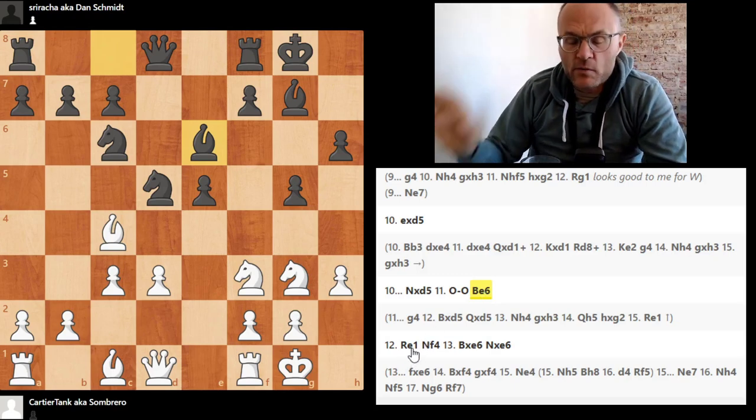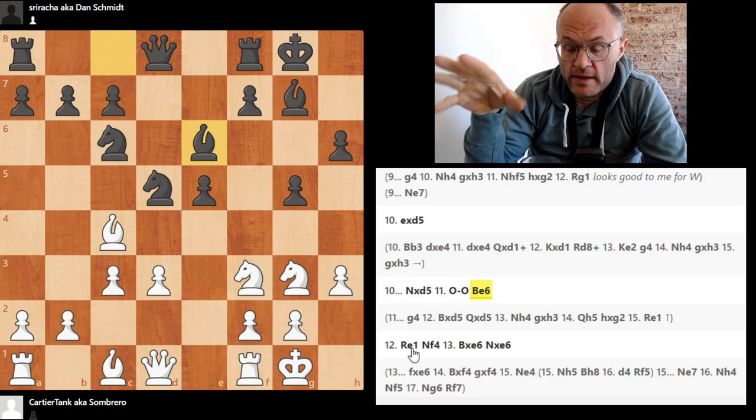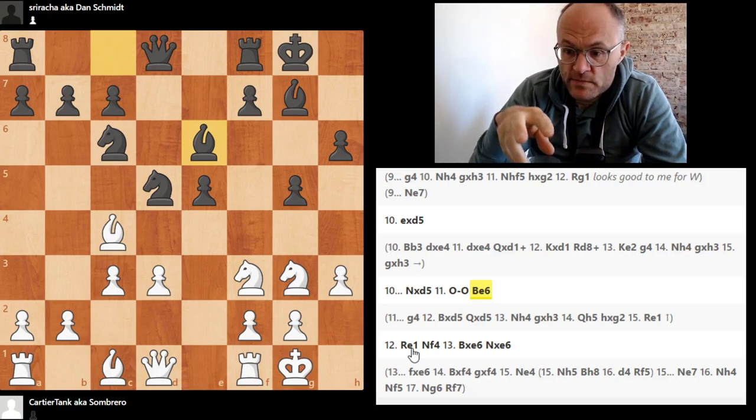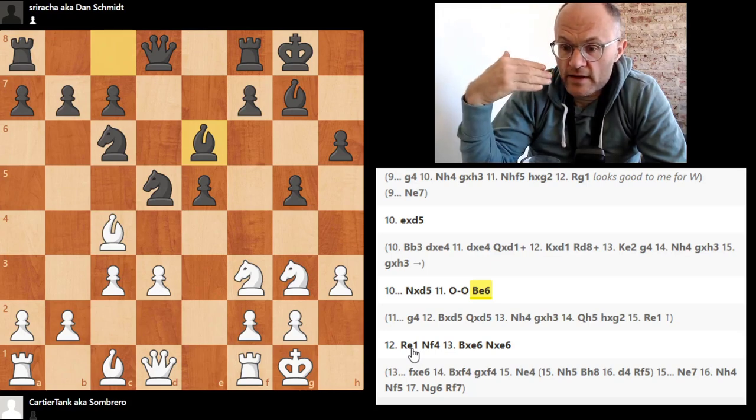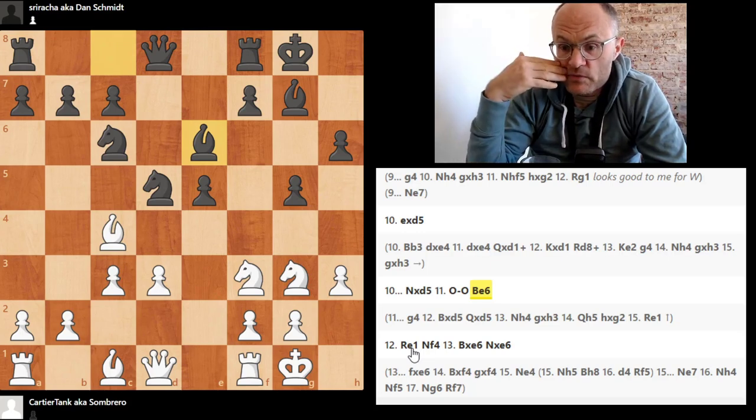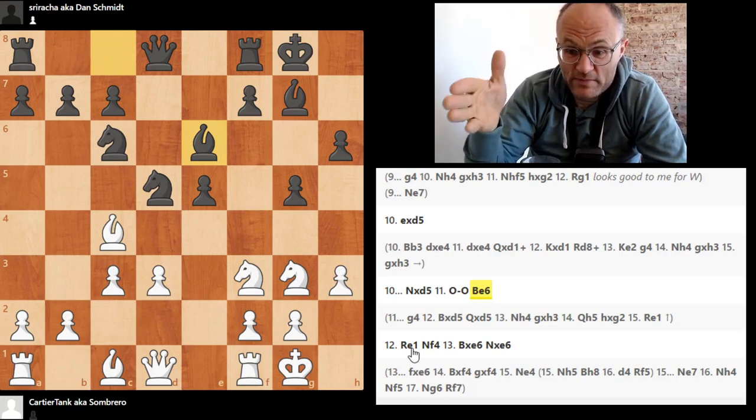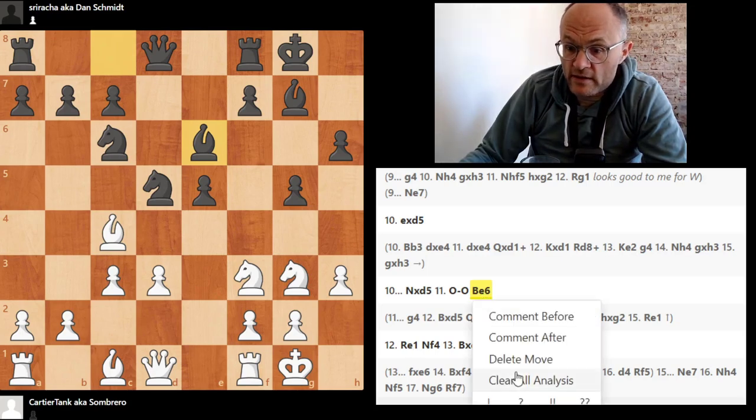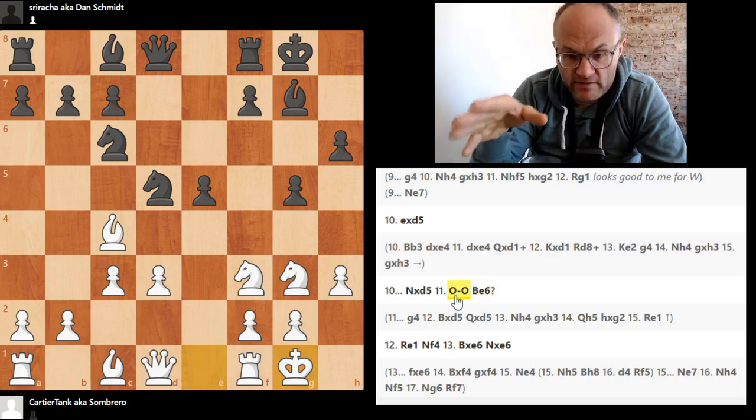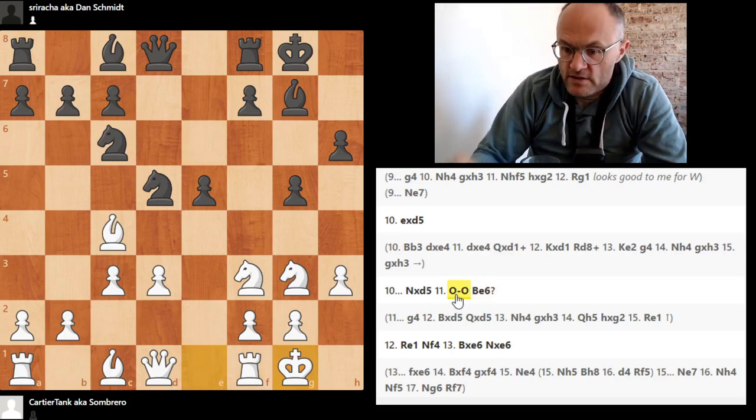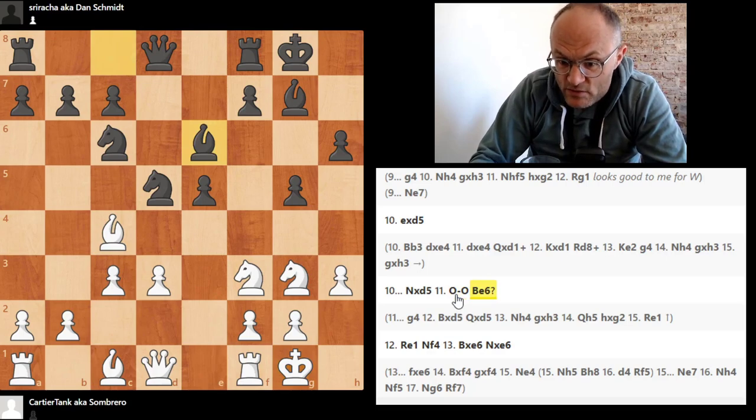So, and by the way, one thing I just want to make a note. Sombrero, like everybody, is on a learning curve with doing the notes. And you can see he's got some succinct and good variations here. I think it would help to try to establish which moves he thinks are poor and which moves he thinks are good. So for example, to me, bishop e6 would deserve a question mark, as well as some of the other ones, as we discussed.